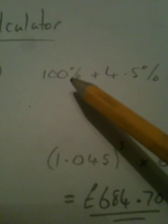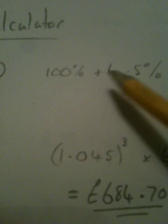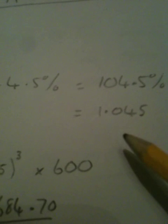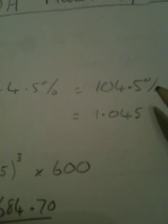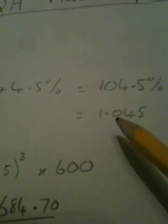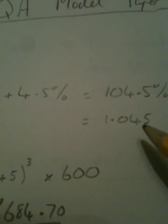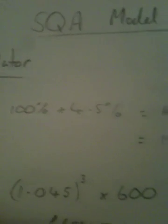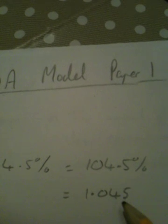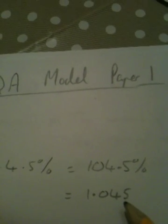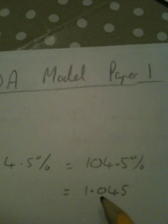Originally it's worth 100% of its value. That goes up by 4.5%, so that will be 104.5%. Percent is out of 100, so divide this by 100 and we'll get 1.045. To find the price after one year, multiply by 1.045.